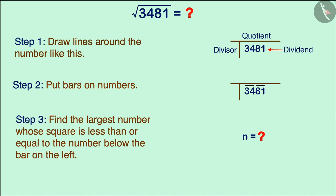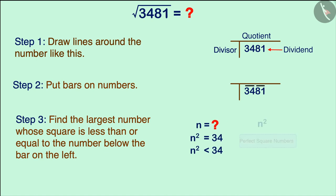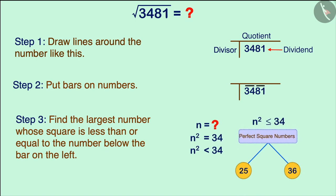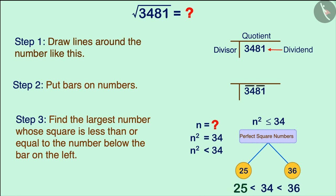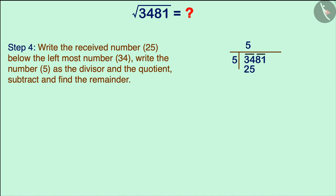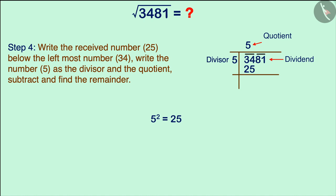Now we have to find the natural number whose square is equal to or smaller than the number below the leftmost bar, that is 34. We can also say that we have to find the perfect square number that is less than or equal to 34. We know that 25 and 36 are perfect square numbers and 34 falls between them. Because 25 is the largest perfect square number smaller than 34, we write 25 below 34. Here 34 is the first dividend. 25 is the square of 5, so we consider 5 as the divisor. The first digit of the quotient will also be 5, because 5 times 5 equals 25.